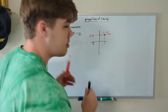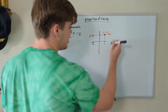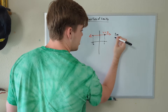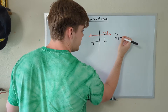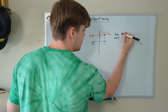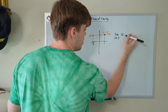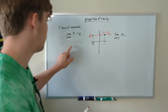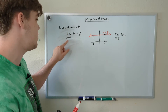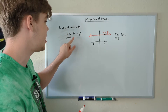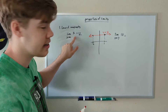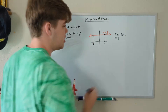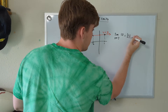Let's do a written example. If we have the limit as x approaches 7 of 10, what is that limit equal to? We know based on our rule that the limit of x approaching anything of k, k being our constant, is just equal to the constant. So this limit is just 10.